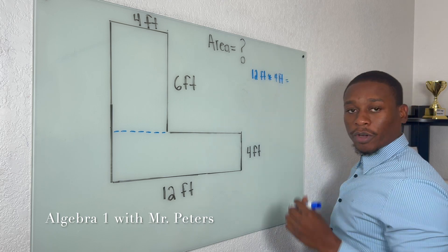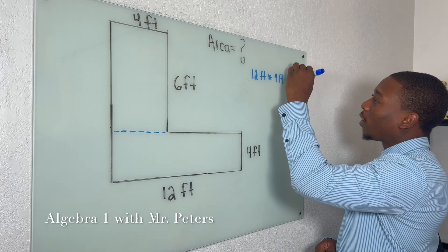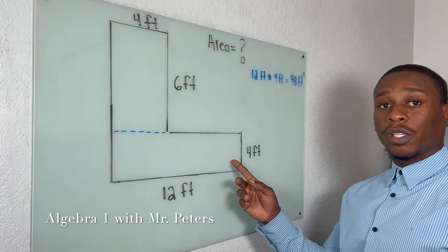And just don't forget the units feet squared. So what we're going to have is 48 feet squared after we find the area for this rectangle.